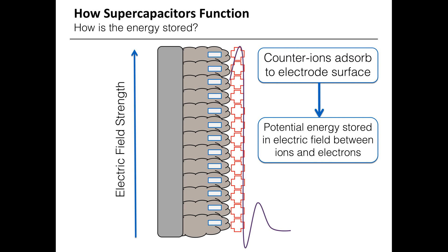The counter ions, which in this case are the positive ions, adsorb to the surface of the electrode, and a very intense electric field is now holding the electrons from the electrode and the ions in the electrolyte close to one another. This intense electric field is where the cell is storing its energy as potential energy.